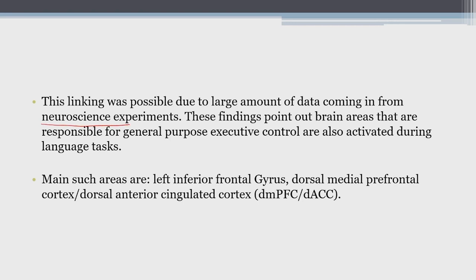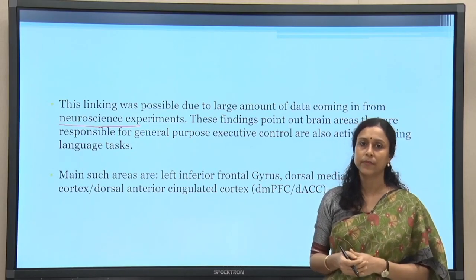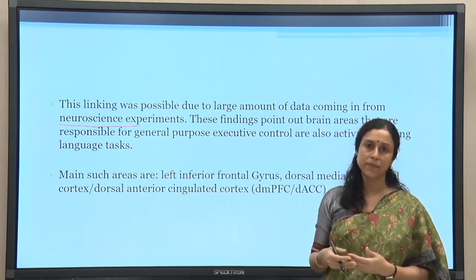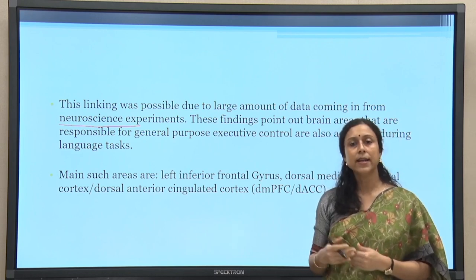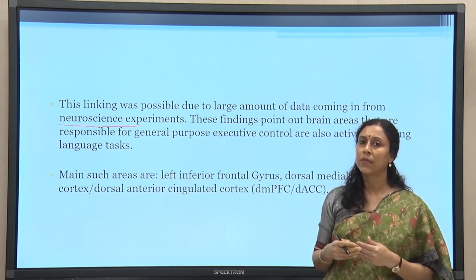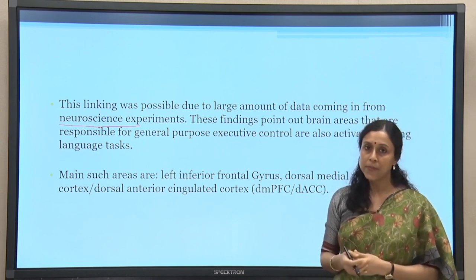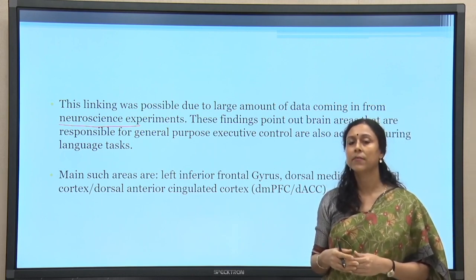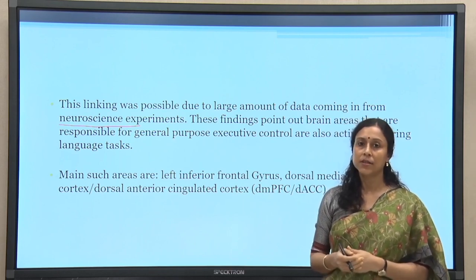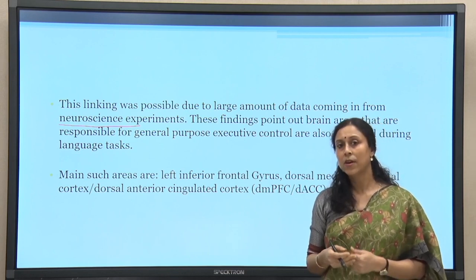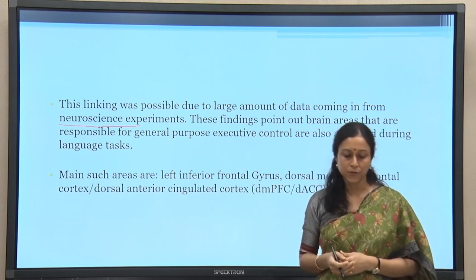These findings point out that brain areas responsible for general purpose executive control are also activated during language tasks. In terms of executive control mechanism, certain brain areas are responsible for general purpose cognitive control in human beings. When we link these functions to language processing tasks, the primary objective is to find whether those brain regions are activated while processing language — in conditions where there is some kind of conflict or competition which needs to be resolved. Cognitive control is activated when there is a conflict; conflict monitoring and conflict resolution are the fundamental aspects of cognitive control.